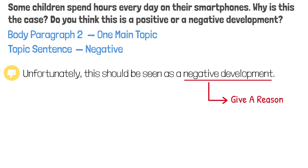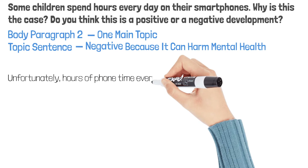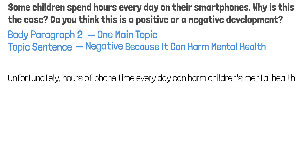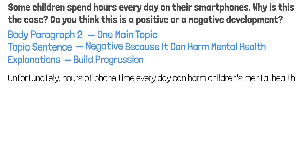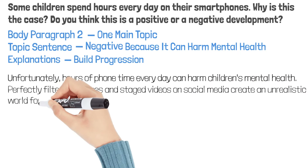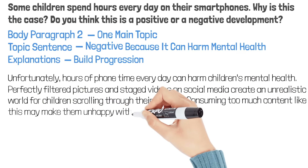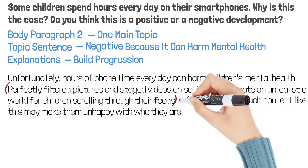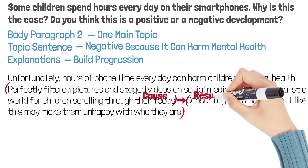I think it's a negative development because it can harm children's mental health. We need to put mental health in our topic sentence: 'Unfortunately, hours of phone time every day can harm children's mental health.' When we develop this topic sentence, the goal is to build progression rather than listing items. 'Perfectly filtered pictures and staged videos on social media create an unrealistic world for children scrolling through their feeds. Consuming too much content like this may make them unhappy with who they are.' Note how the first sentence leads logically to the second — because many social media posts are toxic, consuming them may make children unhappy with who they are. This is the cause and this is the result.